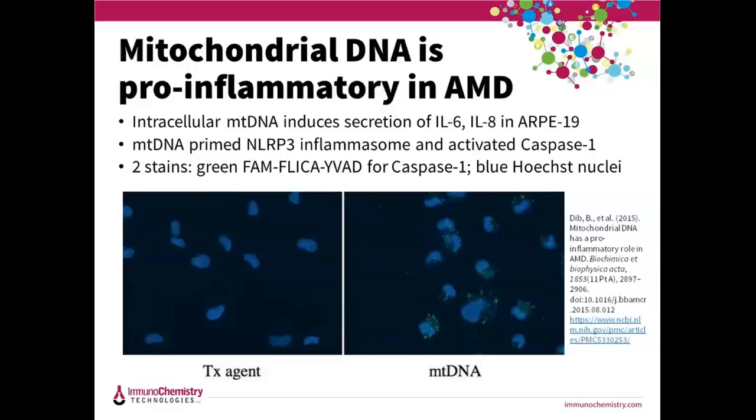So will mitochondrial DNA activate caspase-1 in RPE cells? In this experiment, they found that it will. These are human ARPE-19 cells that were transfected with a control or mitochondrial DNA. Twenty-four hours later, they were labeled with ICT's green caspase-1 probe FAM-YVAD-FMK for two hours, washed, and then Hoechst was added to label the nuclei blue. Apoptotic cells are green, which is seen in the picture on the right, and not really on the left control cell. They found that intracellular mitochondrial DNA induces ARPE-19 cells to eventually become apoptotic.